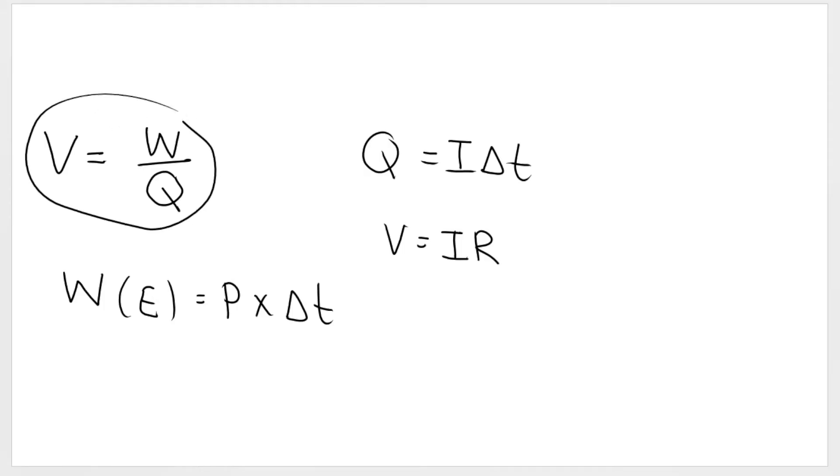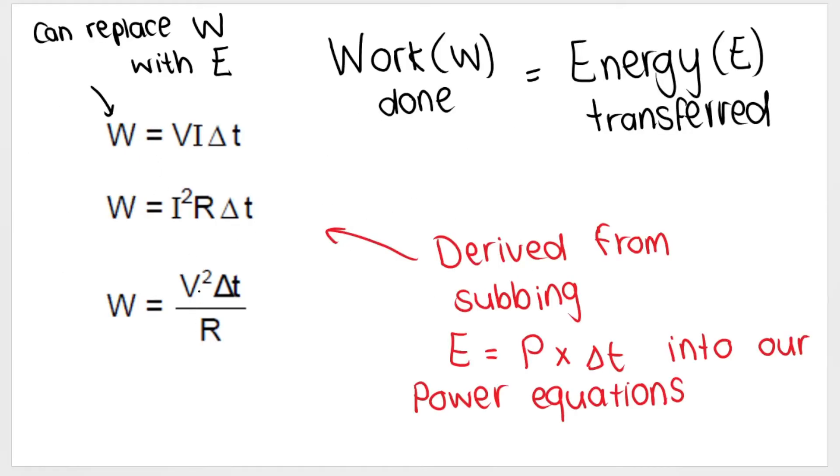So these are the formulas that you should be aware of so far based on grade 10 work. This is the formula for potential difference or voltage. We've got the formula for charge or current. And then Ohm's law which allows us to work out resistance, current, or voltage. And now we've got energy or work is equal to power multiplied by time. When we combine and rearrange these formulae we can get these three new formulae. The work done or the energy transferred depends on time, current, voltage, resistance.